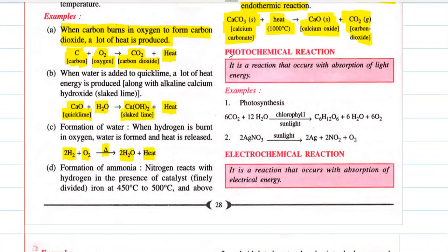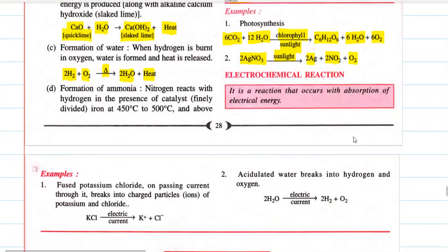Photochemical reaction is also a type of energy change — it is a reaction that absorbs light energy and then proceeds ahead. Photosynthesis: carbon dioxide plus water gives glucose plus water plus oxygen in the presence of sunlight and chlorophyll. Silver nitrate in the presence of sunlight decomposes into silver, nitrogen dioxide, and oxygen. Remember: silver nitrate is always stored in colored bottles; otherwise in sunlight it will decompose and you will lose the precious salt.